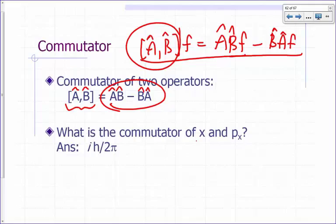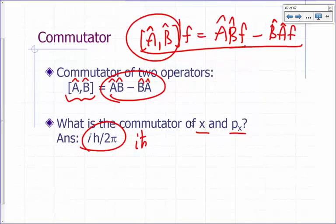So what's the commutator of x and px? You should be able to show that that is equal to iħ. Let's see if we can do that.